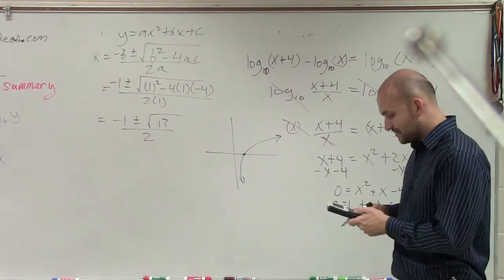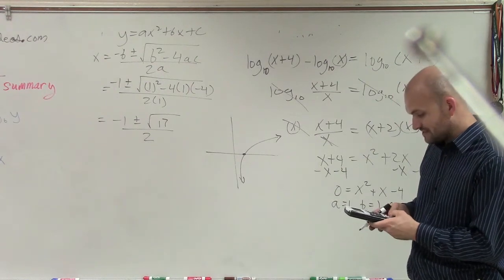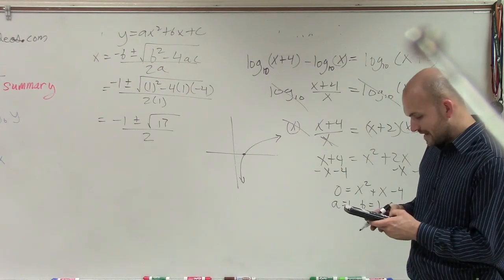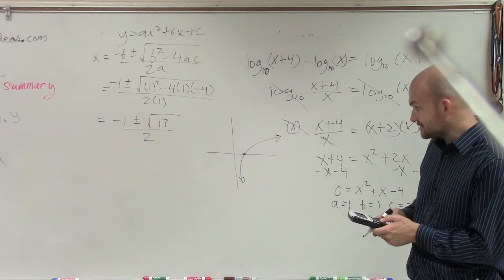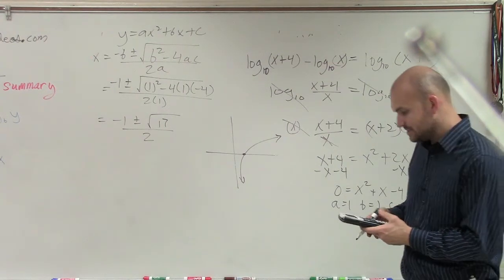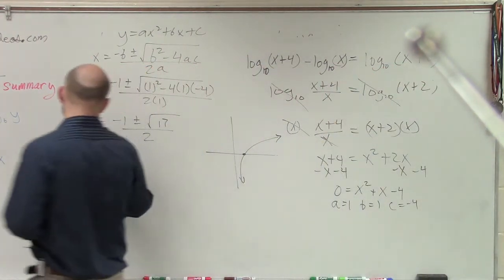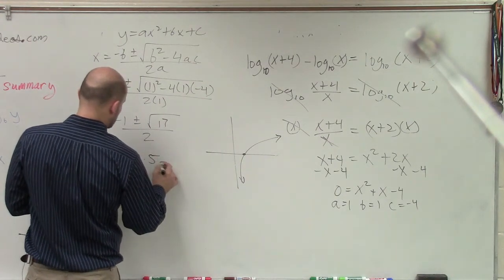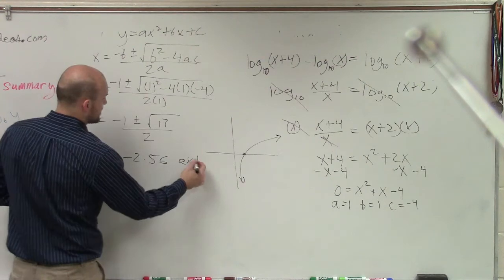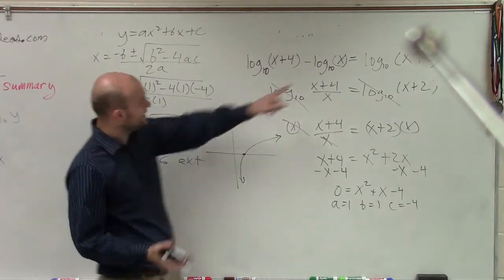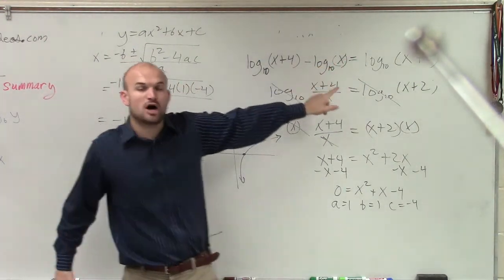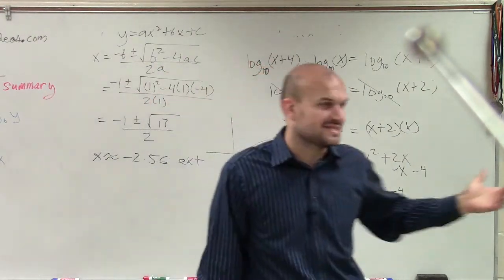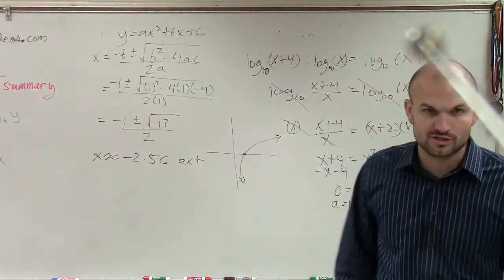So to figure that out, I take the square root of 17, and I do negative 1 minus that answer, and then divide it by 2. And what I have is x is approximately negative 2.56. Well, that answer, ladies and gentlemen, is extraneous. Because if I put that answer in for that, and I try to evaluate what is the log base 10 of negative 2.56, that's not going to work. It's going to be extraneous.